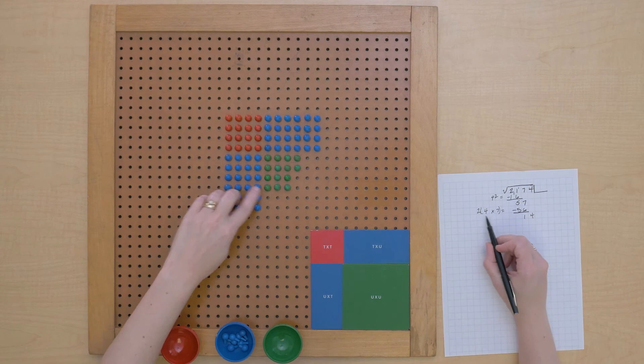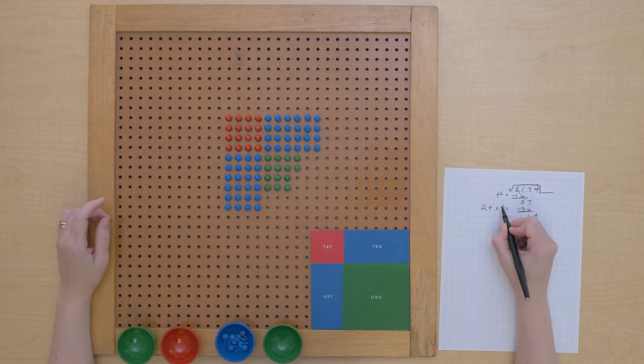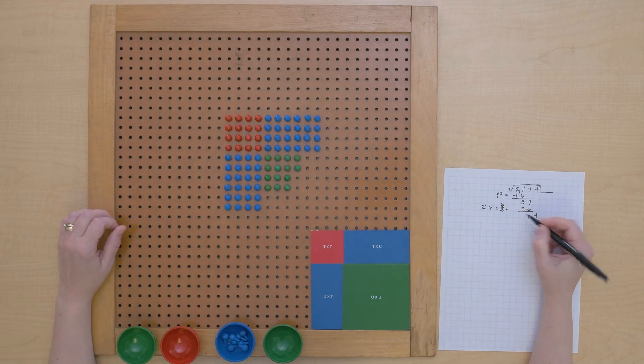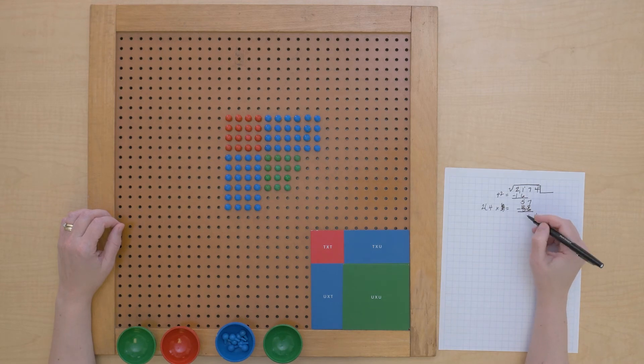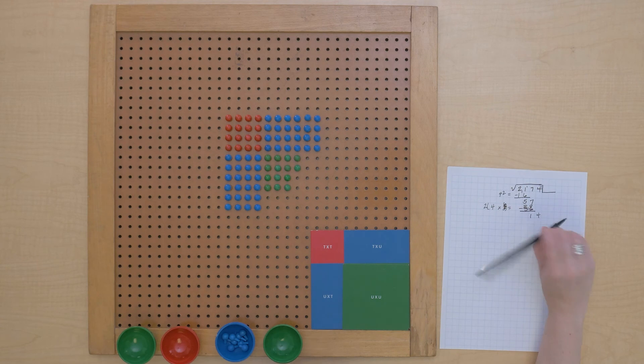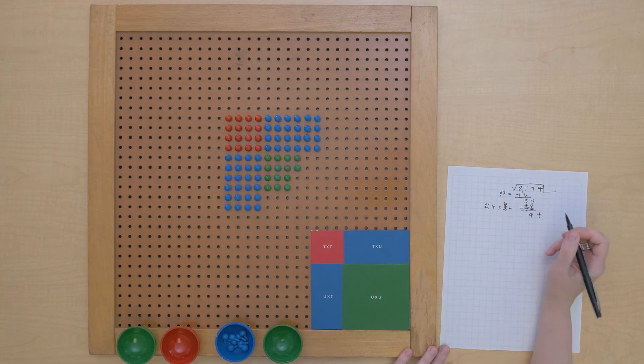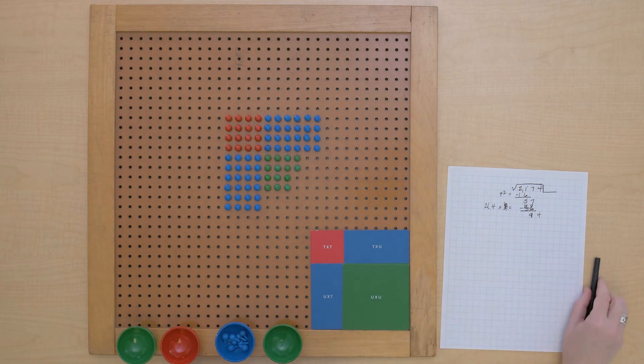So instead of two 4 times 7 rectangles, it's two 4 times 6 rectangles, which gives us 48. That means we should have 94 units left to share out.